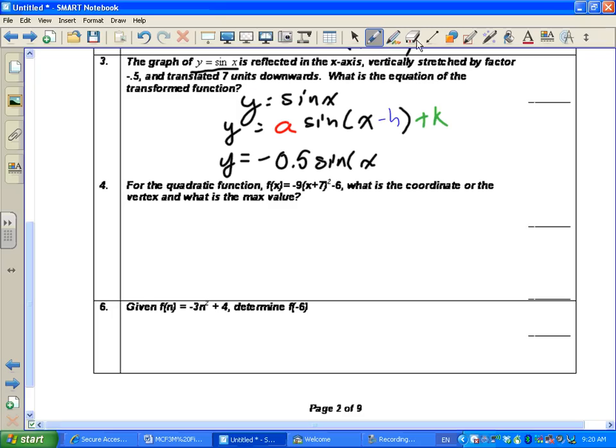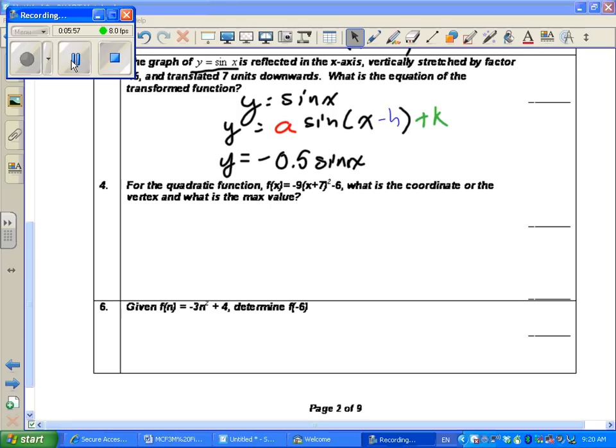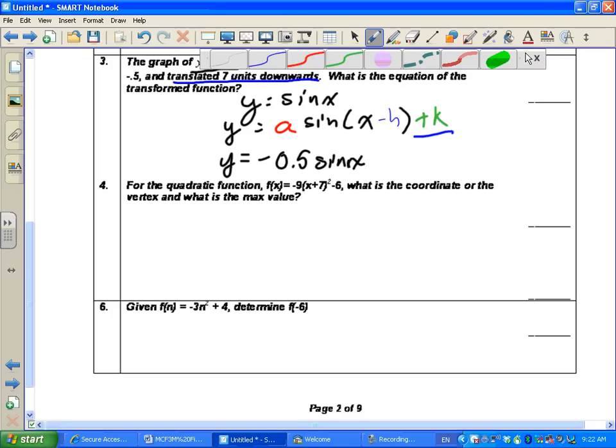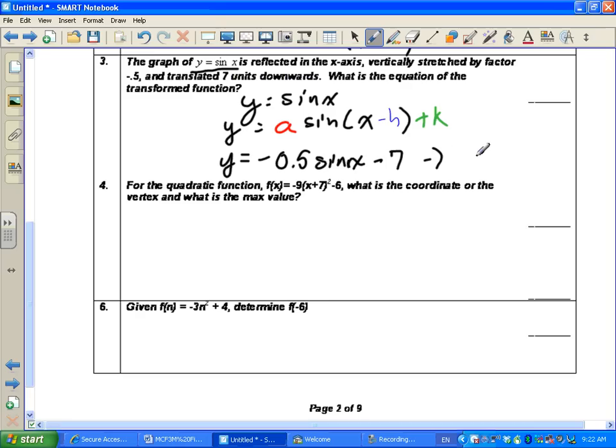So y is equal to negative 0.5 sine. The sine doesn't change, the x doesn't change. Is there any horizontal shift in this question? No. So if there's no horizontal shift, I don't need to put brackets around x. Finally, it says it is translated 7 units downward. That's a movement on the y-axis. And because it's downwards, that means we're moving in a negative direction 7 units. What it says is y is equal to negative 0.5 sine x minus 7 is the answer to question 3.